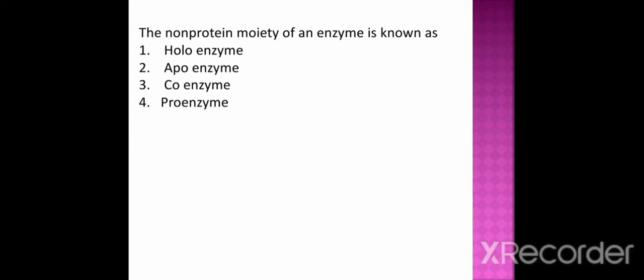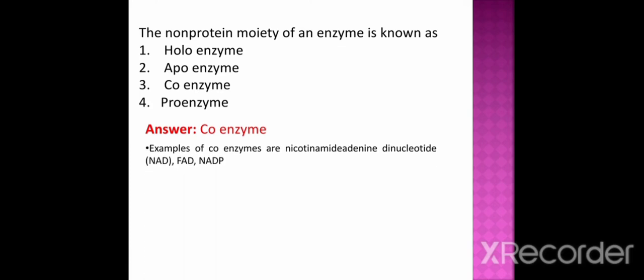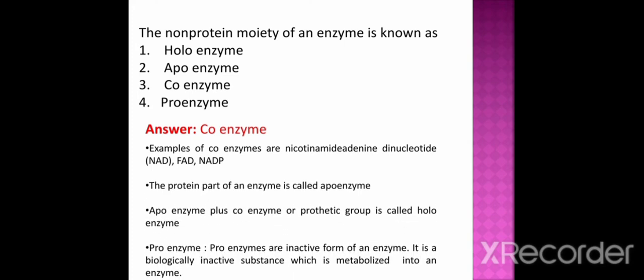The non-protein moiety of an enzyme is known as option 1 holoenzyme, option 2 apoenzyme, option 3 coenzyme, option 4 proenzyme. The correct option is coenzyme. Examples of coenzymes are NAD, NADP, FAD, etc. The protein part of an enzyme is called apoenzyme. The apoenzyme plus coenzyme or prosthetic group is called holoenzyme. Proenzyme is the inactive form of an enzyme; it is a biologically inactive substance which is metabolized into an active enzyme.